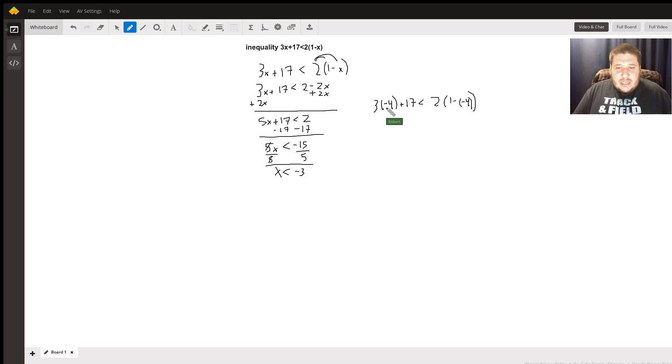Simplifying the left side, I have 3 times negative 4, which is negative 12 plus 17, which gives me 5. Simplifying the right side, I have 1 minus a negative 4, which is a positive 4, so we have 1 plus 4. 1 plus 4 is going to give me 5, and 2 times 5 is going to give me 10. I see here that I have 5 is less than 10, which is true. So therefore, that is correct.